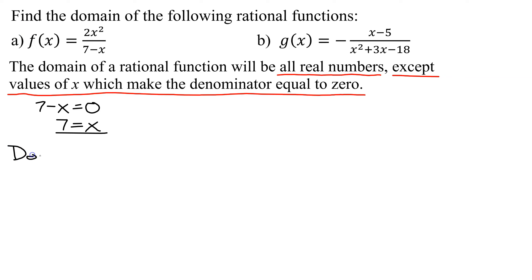For part A, the domain is going to be all real numbers except x equals 7. And if you want to write it in set builder notation, you'd write x such that x does not equal 7.